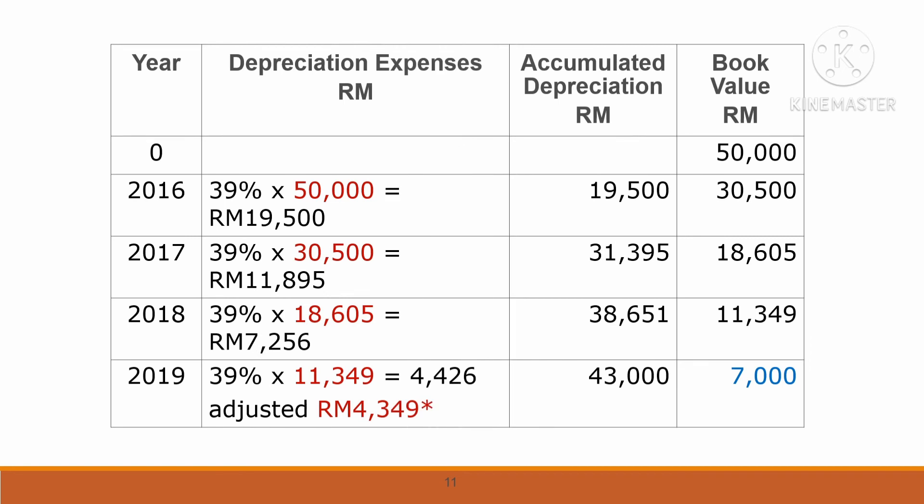This is the depreciation schedule under the reducing balance method. For the first year 2016, we calculate depreciation using cost times the depreciation rate, giving RM19,500. The accumulated depreciation for 2016 is therefore RM19,500.